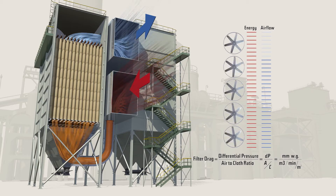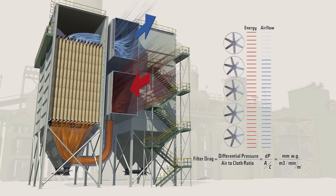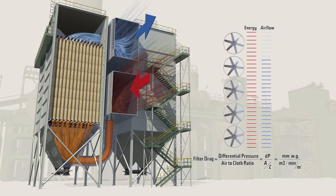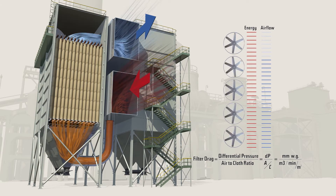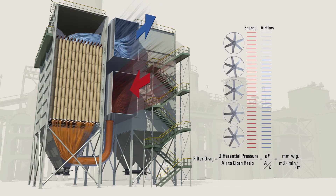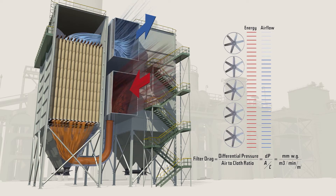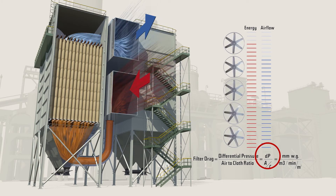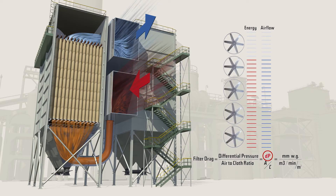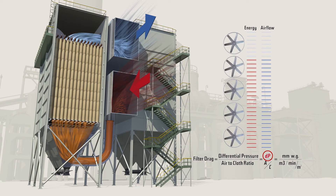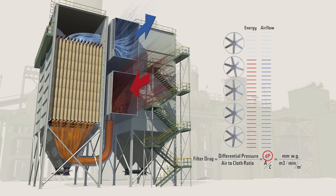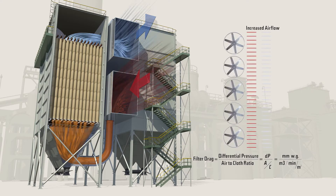Many bag houses on coal-fired boilers are equipped with variable frequency drives on their main ID fan motors. Using Gore Low Drag filter bags will allow for the designed airflow while operating at a 15 to 20 percent lower differential pressure. The fan speed can thus be reduced while maintaining constant flow, using less energy and saving you money.